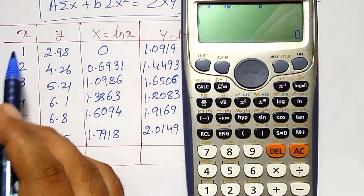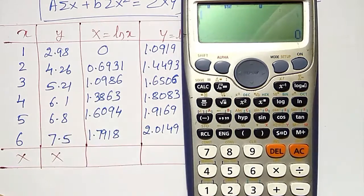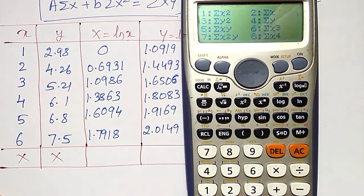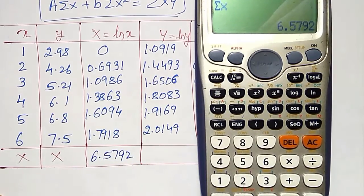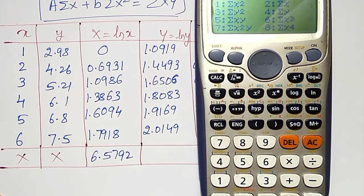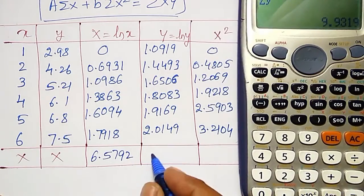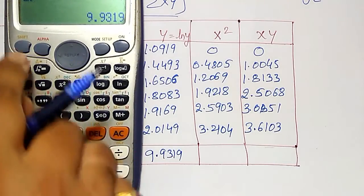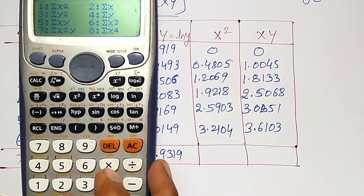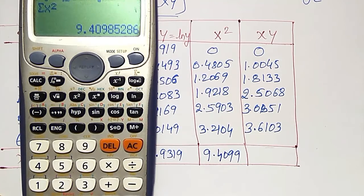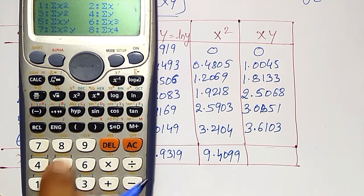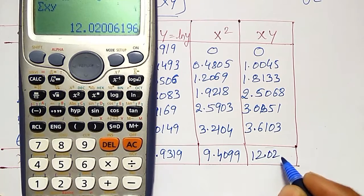Then I want summation of x. I want capital X and capital Y summations here. Shift, stat, sum. I want summation of x, that is option number 2. I am getting it as 6.5792. And again sum of y, option is number 4, I am getting 9.9319. And summation of x square I want. Shift 1, sum option, in that x square is option 1, equal to 9.4099. Then I want summation of xy. Shift 1, 3, xy is option 5, it will become 12.0201.